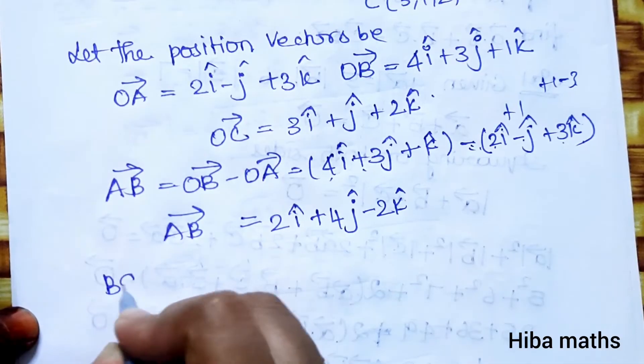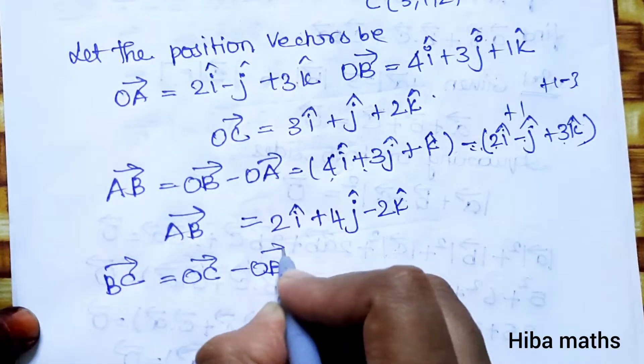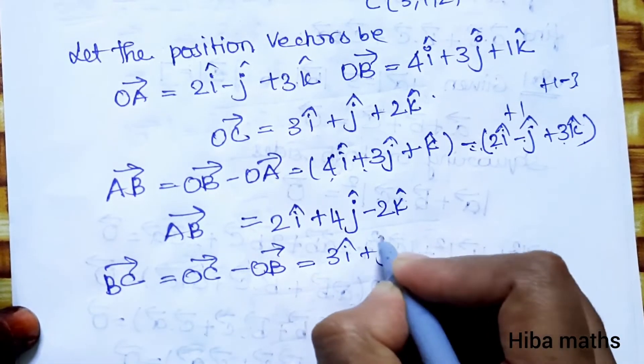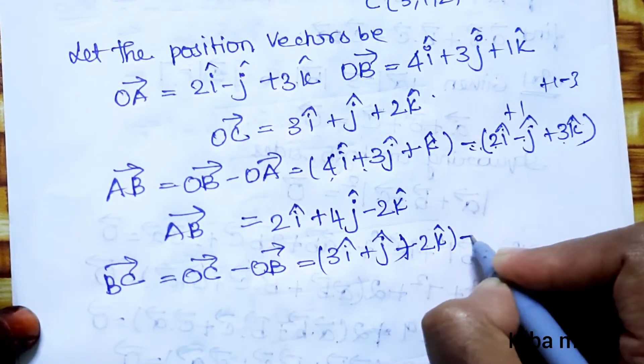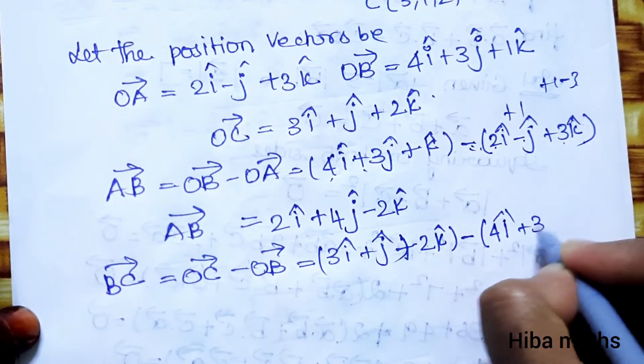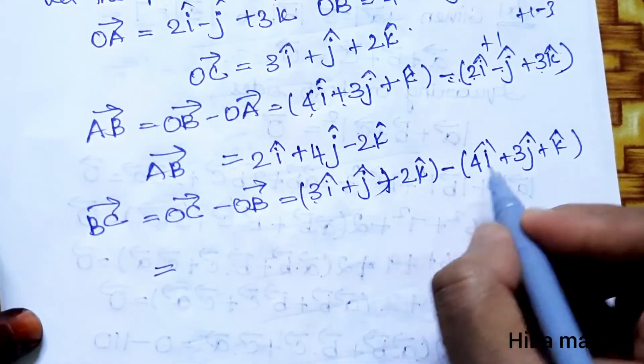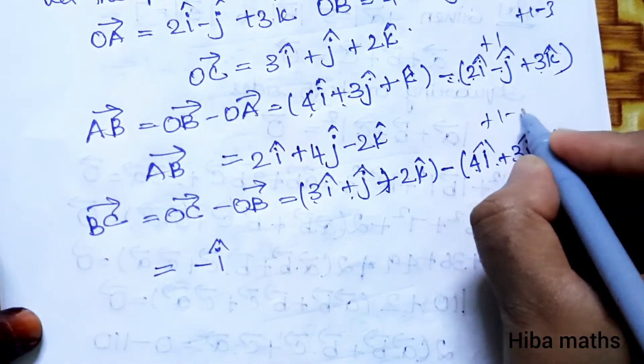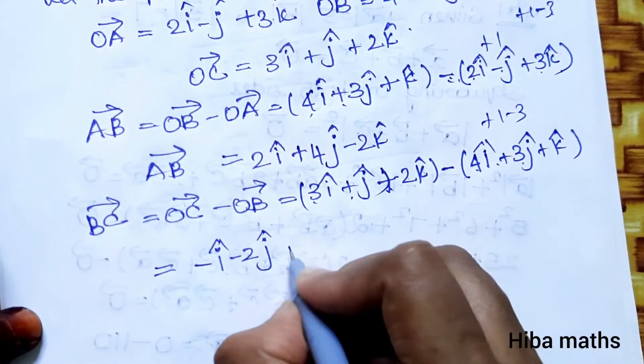Next, BC vector. BC vector = OC vector - OB vector = (3i + j + 2k) - (4i + 3j + k). That equals (3-4)i + (1-3)j + (2-1)k = -i - 2j + k.